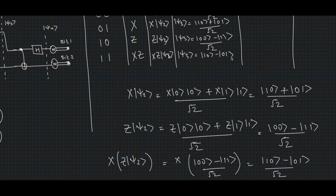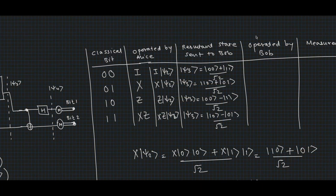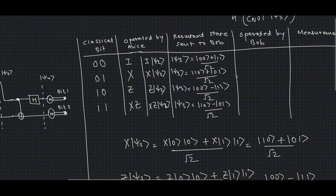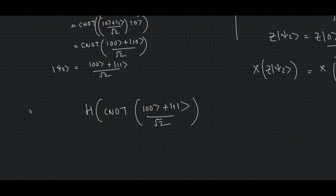Now Alice has done her part. With the second qubit that Bob has, he will perform some operations and measure the two bits. First, Bob performs a CNOT operation followed by the Hadamard gate operated on the first qubit of the ψ₃ state. Let's see what the results of these operations are.